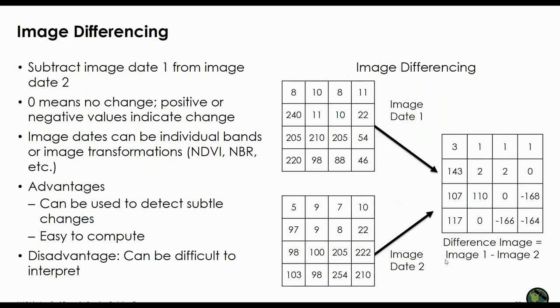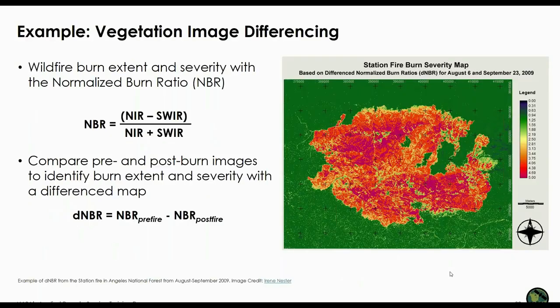The image subtraction method works by taking a single band from two dates and subtracting one from the other to produce a change image consisting of positive and negative values where change has occurred and zero values where no change occurred. The advantage is that it can detect subtle changes, though it may be difficult to interpret. We'll be doing this approach in today's exercise. Calculating the difference normalized burn ratio (dNBR) to assess burn severity is a good example — this involves calculating the NBR for each image date and then subtracting the post-fire NBR from the pre-fire NBR.